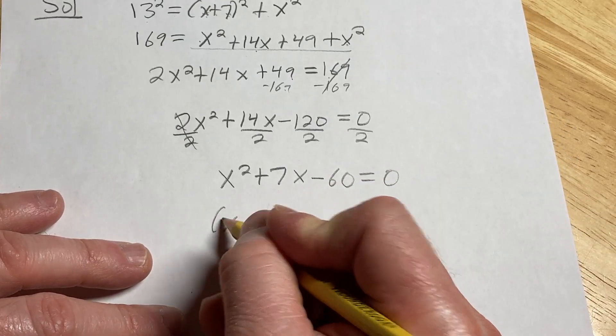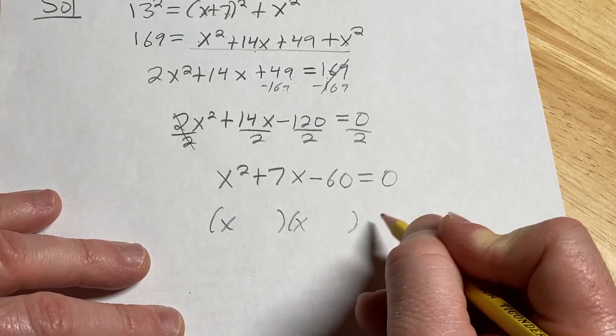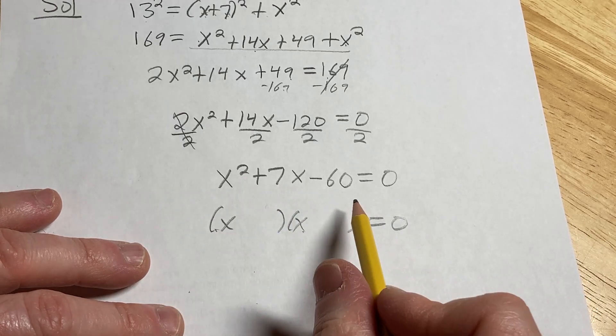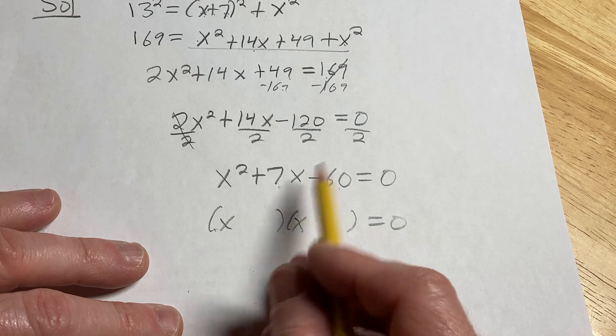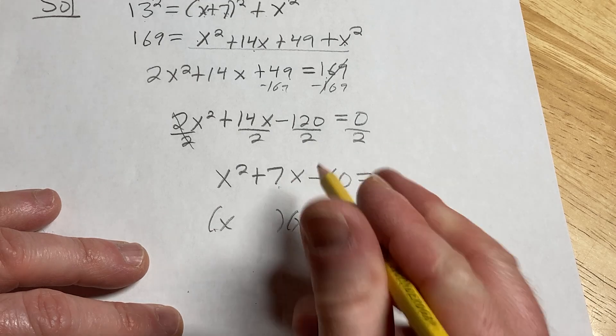Now we can factor this. Should look something like this, x times x is x squared. We need two numbers that multiply to negative 60 and add to 7. So it looks like 12 and 5 should do it.